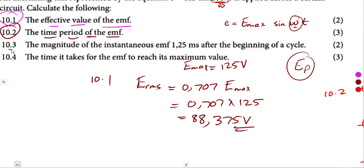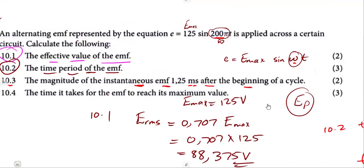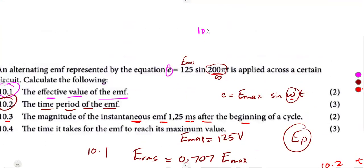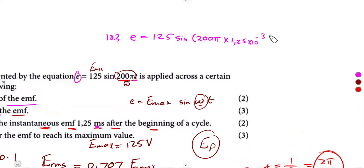Then we move on to the calculation of the magnitude of the instantaneous EMF, 1.25 milliseconds after the beginning of the cycle. So we want to calculate E, the instantaneous value. That's our 10.3. We are given the time as 1.25 milliseconds. So in place of the T, we're going to substitute that value. So that was going to be 200 pi times 1.25 milliseconds times 10 to the negative 3. If you use this part as it is, make sure your calculator is in radians because of this omega that we have in rad per second.